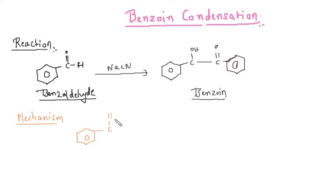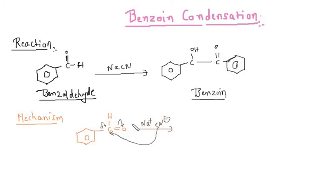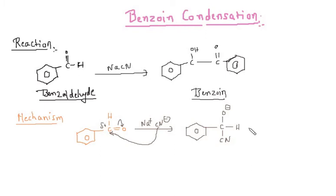So this is benzaldehyde, and as we know that this particular carbonyl carbon is having a positive charge — a delta positive. So what happens is NaCN dissociates into Na⁺ and CN⁻. This CN⁻ attacks over here on the carbonyl carbon, and this bond gets opened up. Finally we are having C-O⁻, H, and CN.